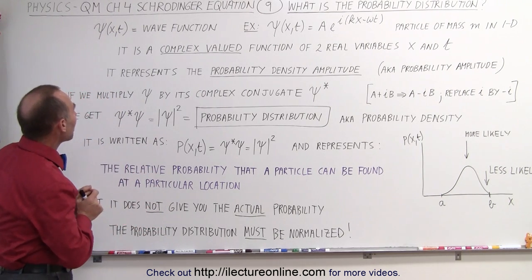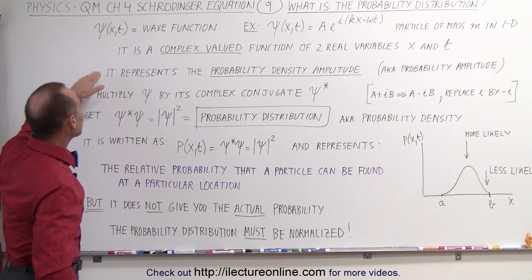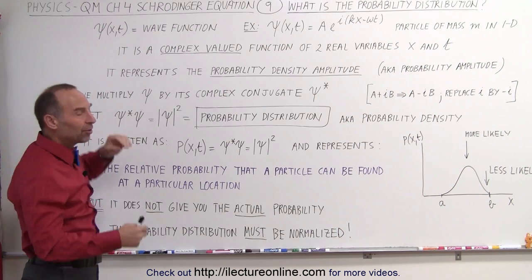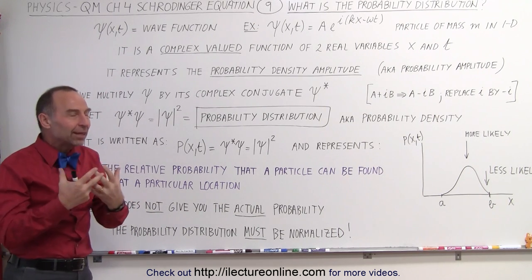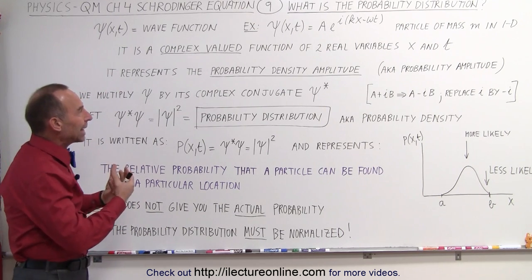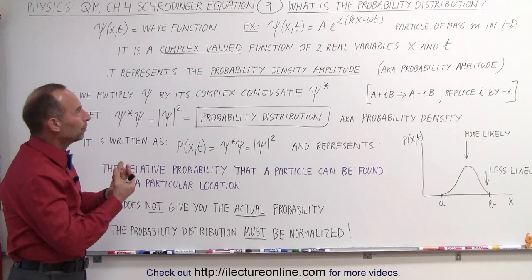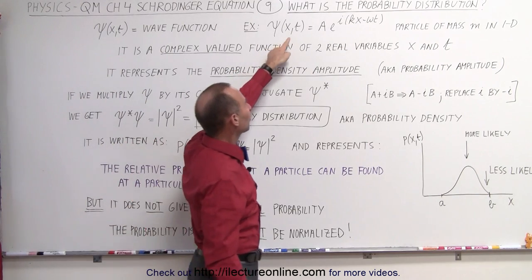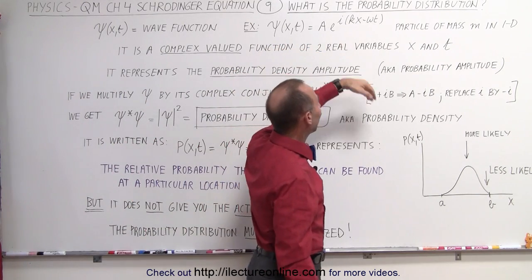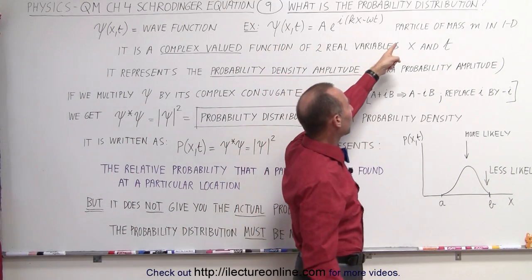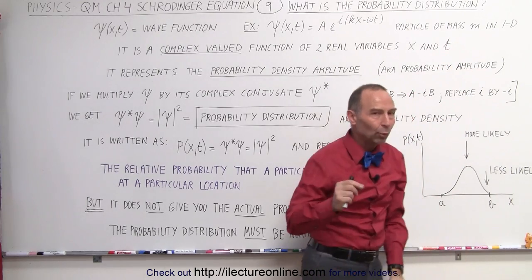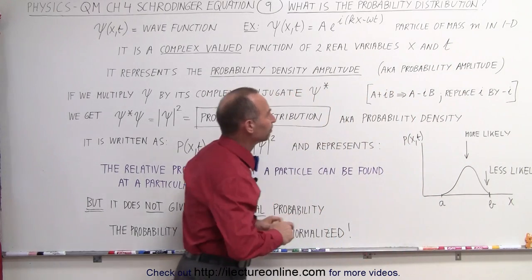Going back a little, remember that we had a wave equation that represented something about a particle. The example we used was for a particle of mass m in one dimension.